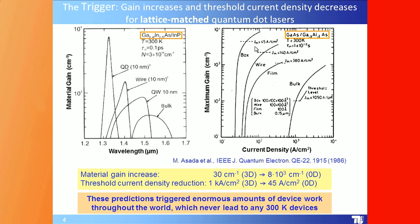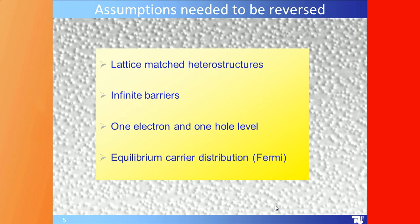A similar calculation for the GaAs/AlGaAs system on a double-logarithmic scale shows maximum gain as a function of current density. The threshold current density was predicted to drop from 1 kA/cm² for 3D bulk material down to about 45 A/cm² for quantum dots. These radical predictions triggered enormous amounts of device work worldwide, but during six to eight years of effort it never led to any 300 K devices, and we will now see why the assumptions made at that time needed to be revised.